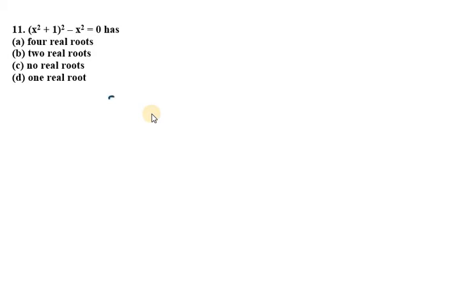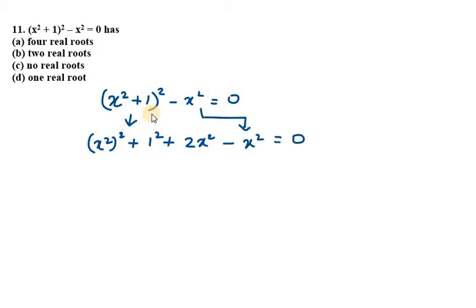First of all, we will simplify this equation. We have x square plus 1 whole square minus x square equals 0. We will apply a plus b whole square in the first part. It will be x square squared plus 1 squared plus 2 into a b. a in this case is x square, b in this case is 1. In the next part, we have minus x square as it is, which equals 0.